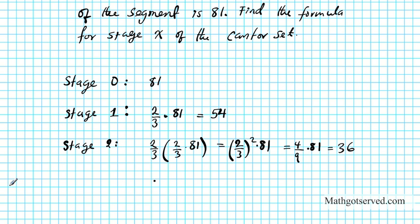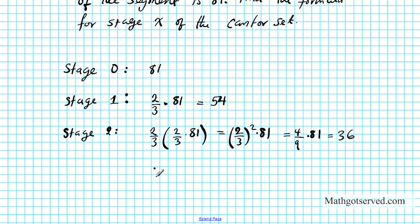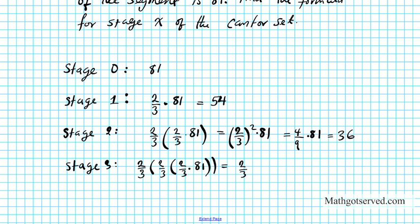For stage 3, we take two-thirds of stage 2. Two-thirds of stage 2 is two-thirds of stage 1, which is two-thirds of stage 0. So this becomes (2/3)³ times 81, which is 8/27 times 81. 27 goes into 81 three times, so 3 times 8 is 24.